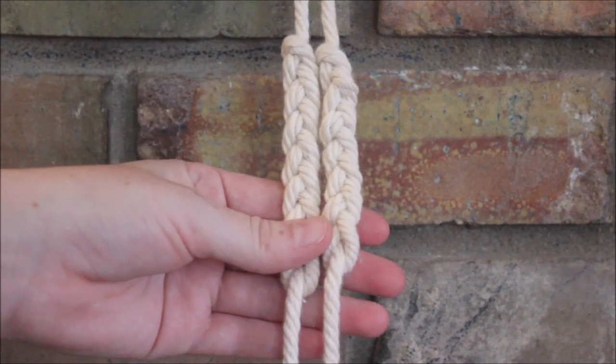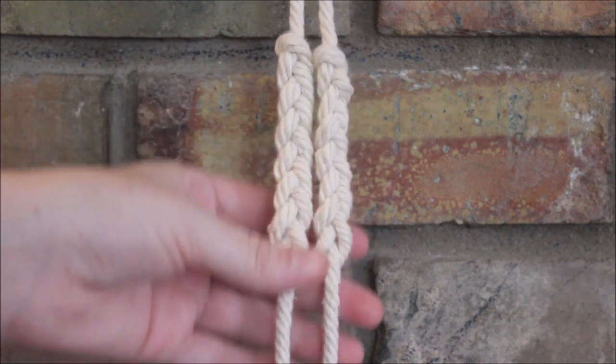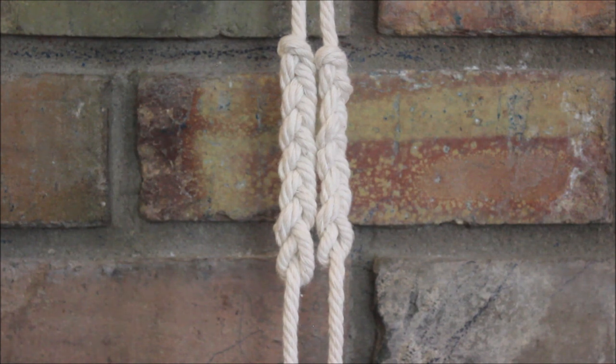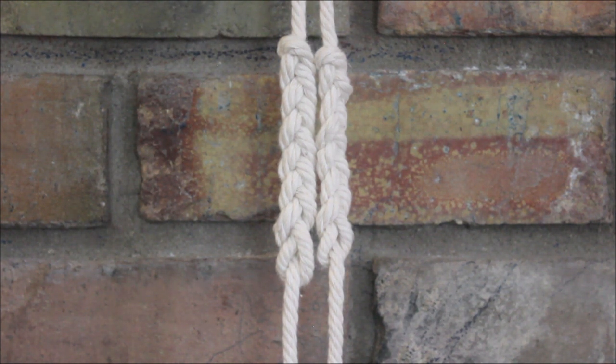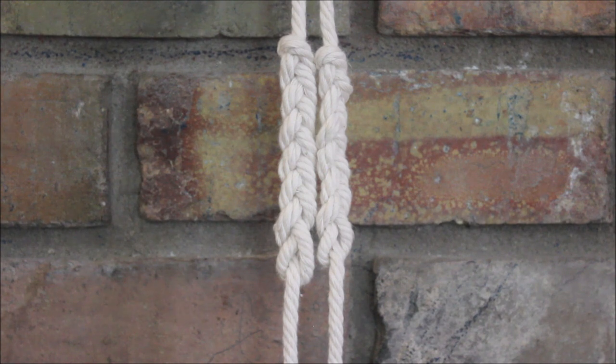This would be perfect for bracelets and it would also be good in your macrame wall hangings. You could use it as a cool fancy decorative ending to your hangings. You could also use it as fun middle pieces and hangings. And really you can just be creative with this knot and do whatever you want.